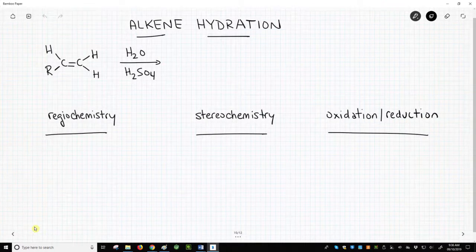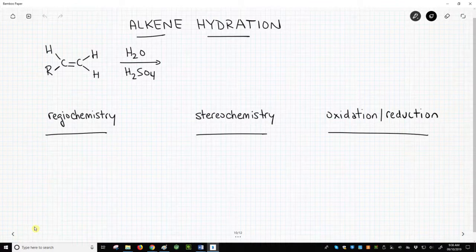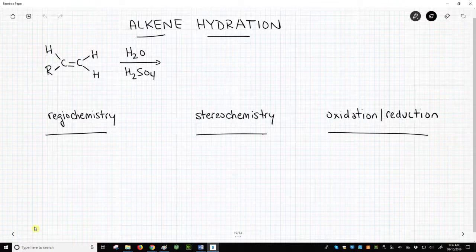This reaction starts with exactly the same alkene we used for hydrohalogenation. The reagents are even related. We're using an acid, but it's sulfuric acid instead of a hydrohalogen acid. We also have water present.